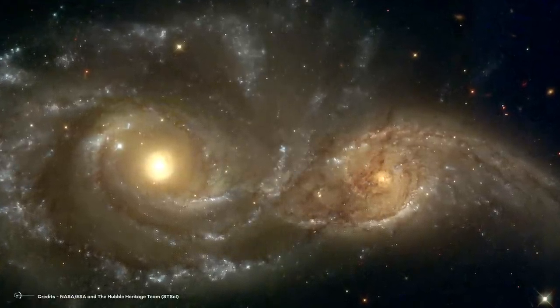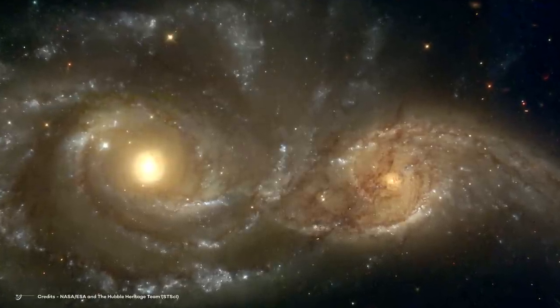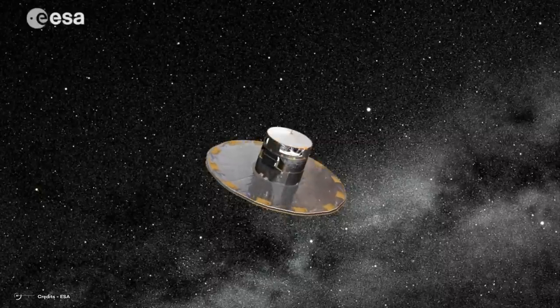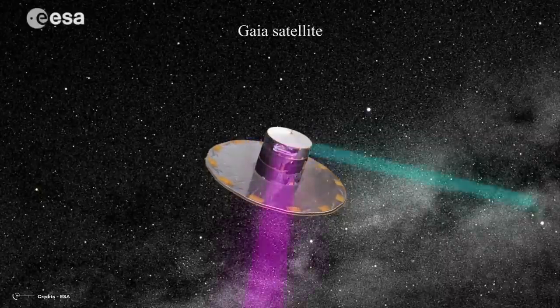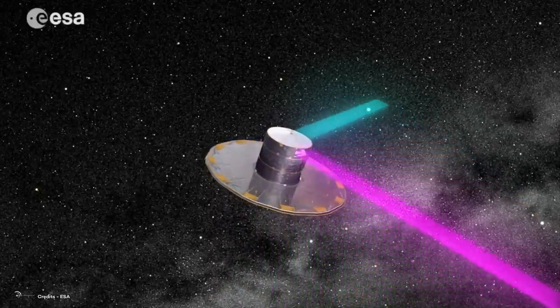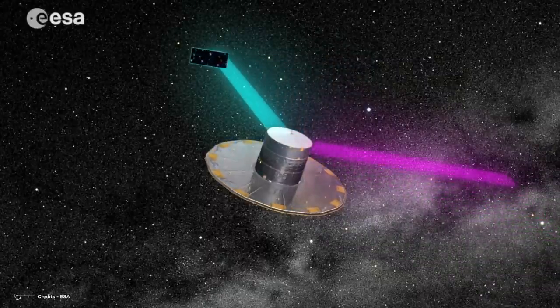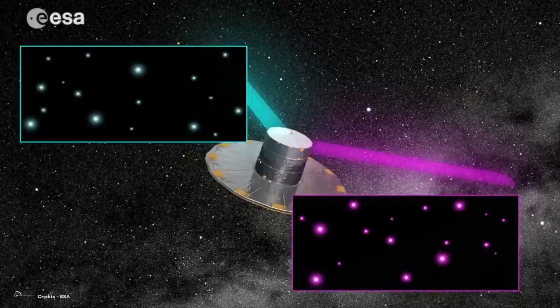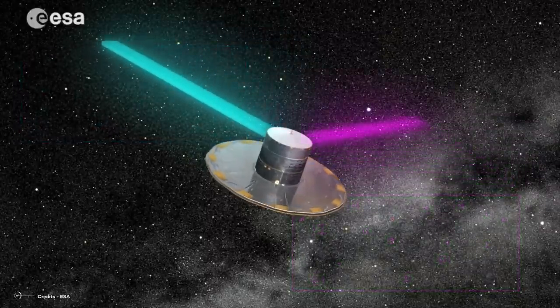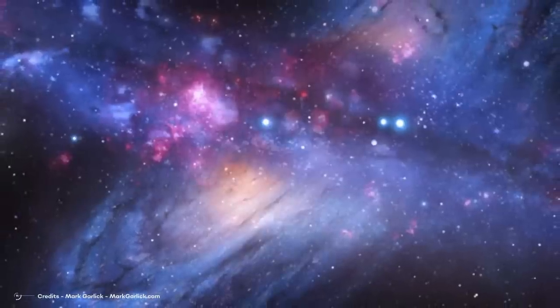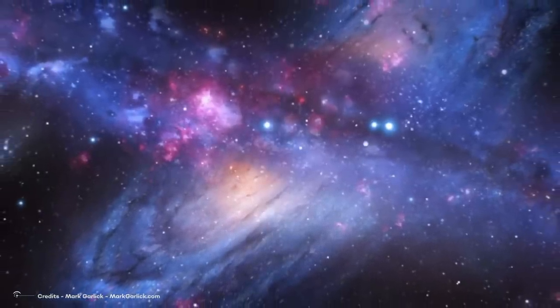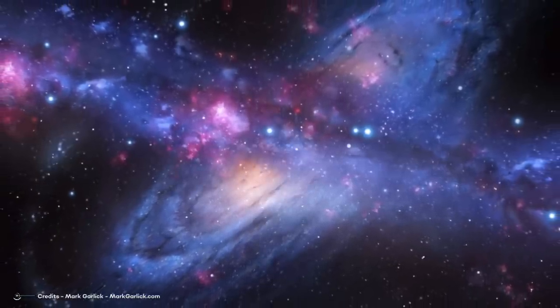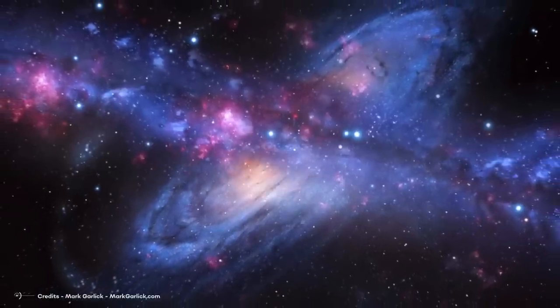The process of tidal stripping has been known to occur for many years, but recent observations have shown that it is happening on a much larger scale than previously thought. Using data from the European Space Agency's GAIA satellite, astronomers have found that large chunks of the Milky Way outer halo are being pulled away by the gravitational influence of nearby galaxies. This has important implications for our understanding of the evolution of the Milky Way and of galaxies in general. It suggests that galaxies are constantly interacting and exchanging material with their surroundings, and that the process of tidal stripping is an important factor in shaping the structure and composition of galaxies over time.